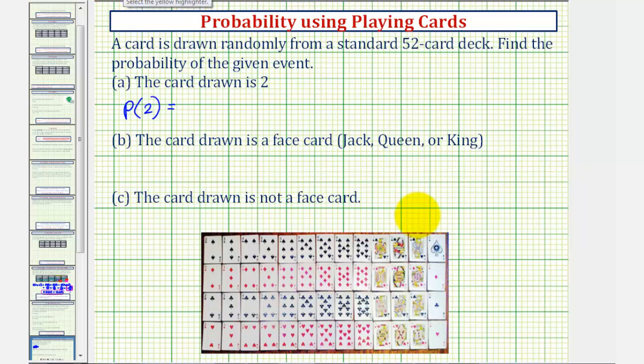So looking at our deck, here are the 2s. There's one 2 of each suit, or a total of 4 2s.